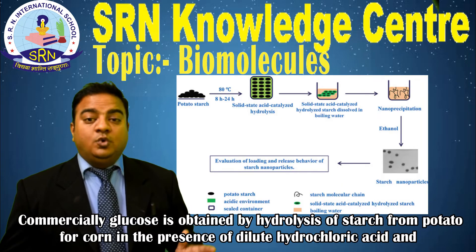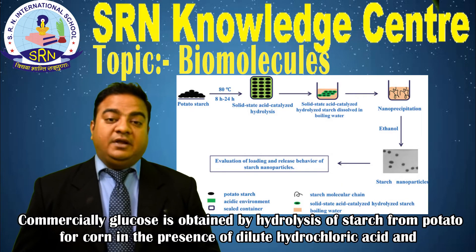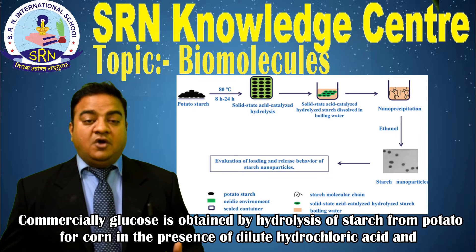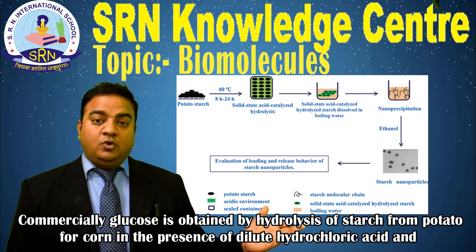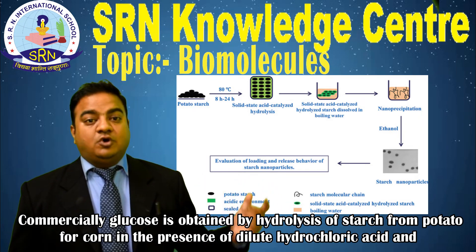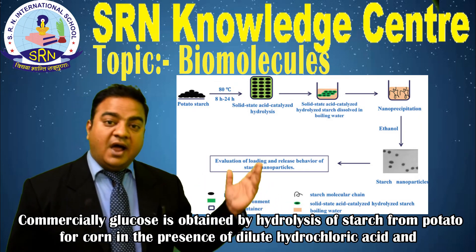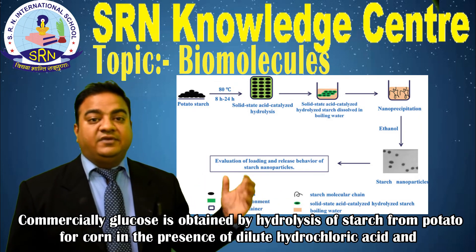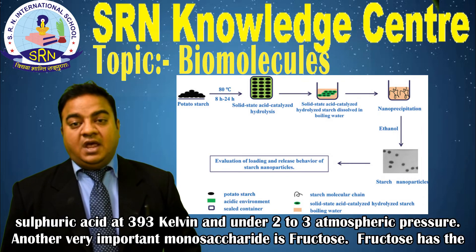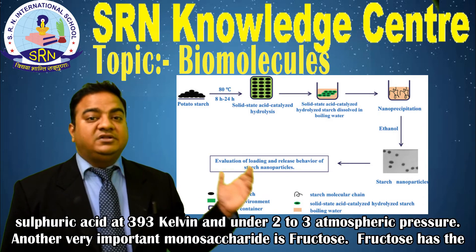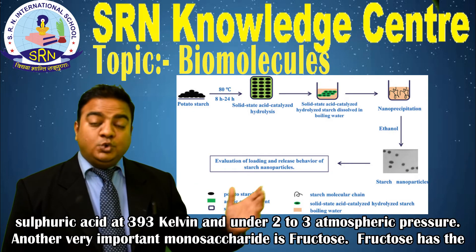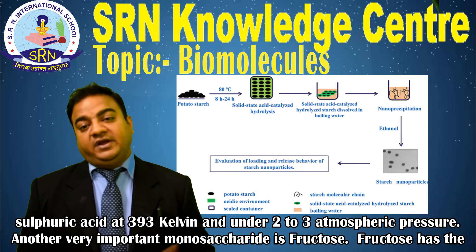Glucose can also be prepared from starch. Commercially, glucose is obtained by hydrolysis of starch from potato or corn in the presence of dilute hydrochloric acid and sulfuric acid at 393 K and under 2–3 atmospheric pressure.